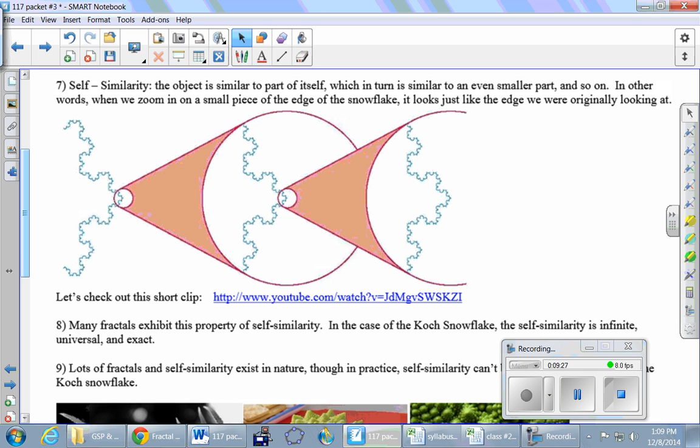Seven, Sue Ann. A fractal is similar to part of itself, and it's secure to be smaller. In other words, if we zoom in at a small piece of the edge of the snowflake, it looks just like the edge of the snowflake. Part of a Koch snowflake after many iterations, if we just zoom in and expand it, looks quite similar and maybe exactly the same as what we had.